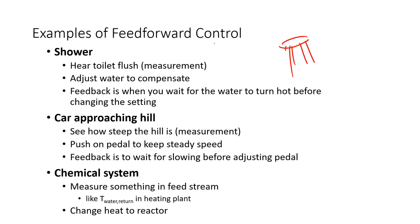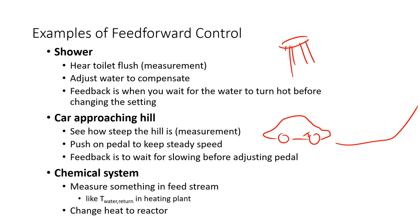Also, consider a car approaching a hill. Someone driving the car might anticipate the hill and press the gas pedal down to compensate, knowing they need more fuel going into the engine to maintain speed going uphill. Feedback would be if you didn't know the hill was coming and your car started slowing down, then you'd apply more gas. With feed-forward, you can anticipate the disturbance and potentially avoid the error in speed, improving disturbance rejection.